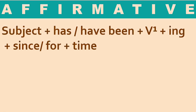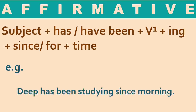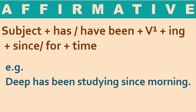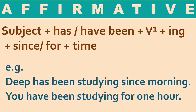For the affirmative sentence, the structure is: subject, has been or have been, first form of the verb with ing, then since or for, then the time. See the example: 'Deep has been studying since morning.' Deep is the subject, has been is the helping verb, studying is the verb with ing added, and since morning expresses the time. Another example: 'You have been studying for one hour.' I will tell you in detail the use of since and for.